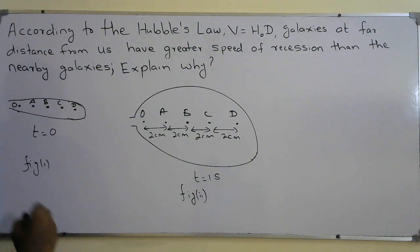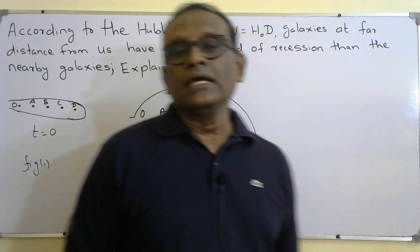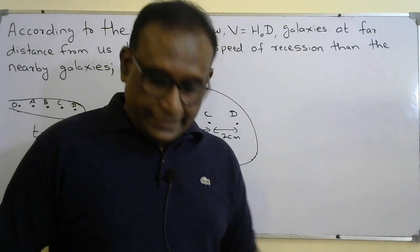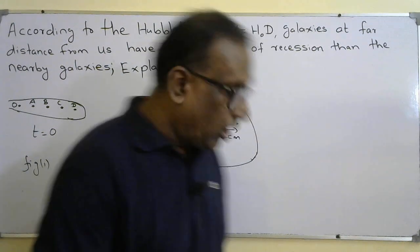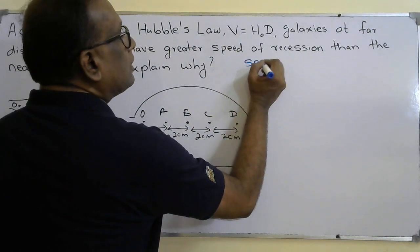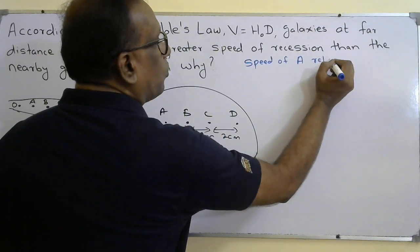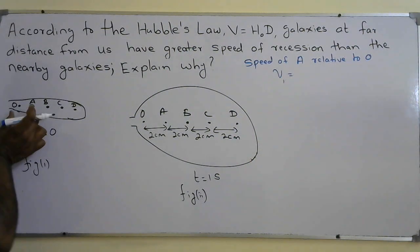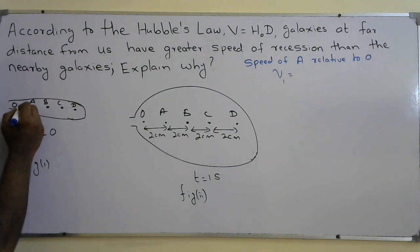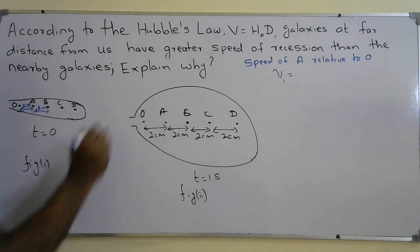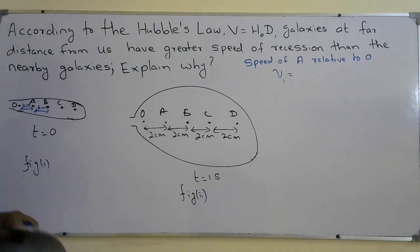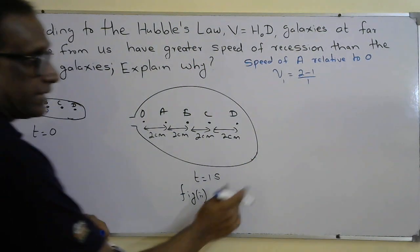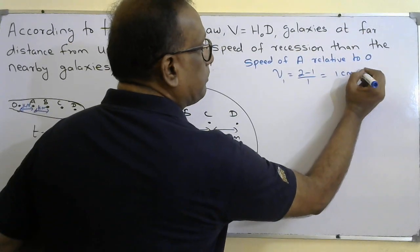Imagine O is the observer. Relative to O, let's calculate the speed of A — call it V1. The initial distance between adjacent dots is one centimeter, and after inflation it is two centimeters. So change in distance is two minus one equals one centimeter, divided by time of one second, giving V1 equals one centimeter per second.